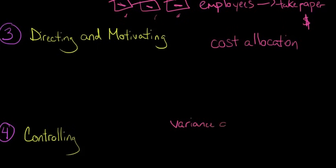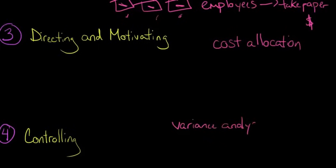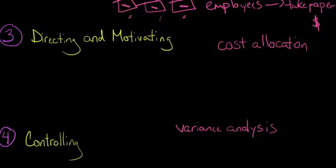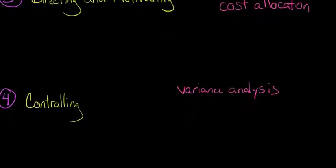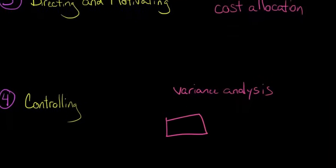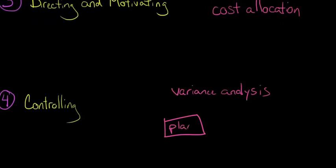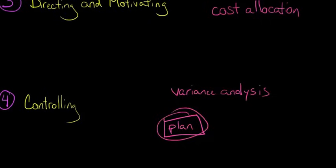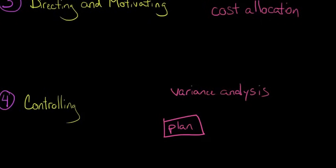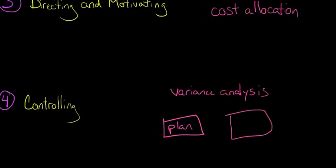Now, variance analysis is a whole topic in and of itself. But in a nutshell, basically what we're doing with variance analysis is we're saying, what was our planned spending? What was our planned cost here? What did we expect that we were going to spend on raw materials or whatever? And then what was the actual cost? What did we actually spend?